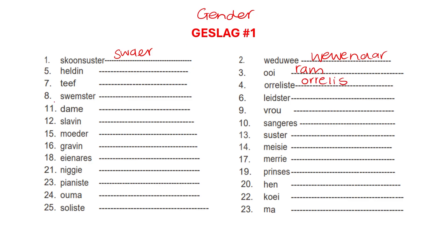Then we have hinde — we have a hinde and we have a hart. Then we have teef — a girl dog is a teef, so a boy dog is just a hond.